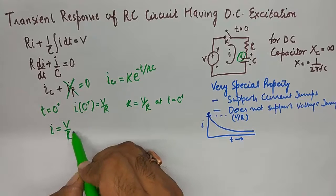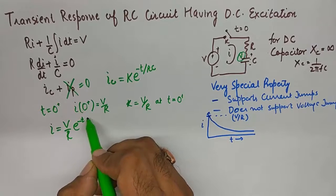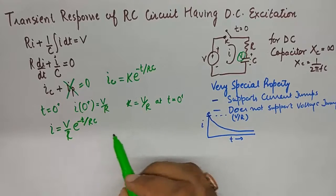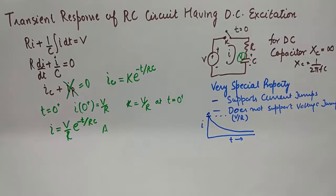And finally we obtain the value of steady state current or I am sorry the instantaneous current to be equal to V/R e^(-t/RC). And this is super important to understand.